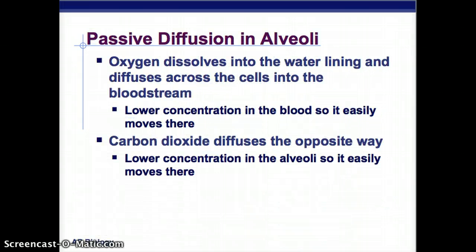Passive diffusion occurs in the alveoli: oxygen dissolves into the water lining and diffuses across the cells into the bloodstream. The blood arriving is deoxygenated and has a lower oxygen concentration, so oxygen easily diffuses over. The same applies to carbon dioxide - the blood has more CO2 than the alveoli do, so carbon dioxide easily moves over into the alveoli.